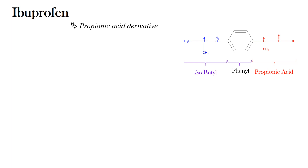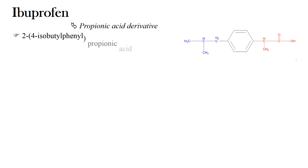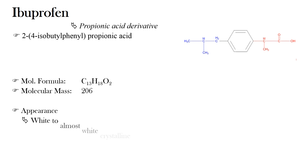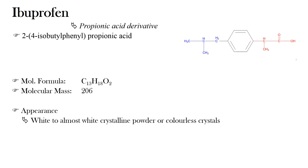The chemical name of Ibuprofen is 2,4-isobutyl phenylpropionic acid. The molecular formula of Ibuprofen is C13H18O2 and the molecular mass of the compound is 206. Ibuprofen appears as white to almost white crystalline powder or colorless crystal, which has a slight odor.